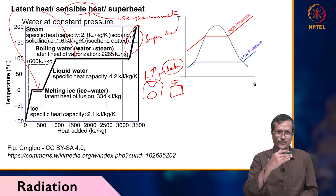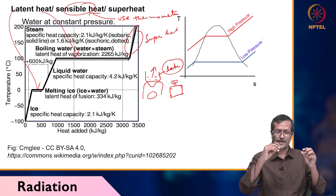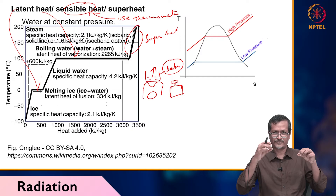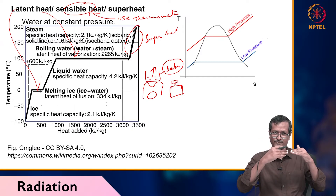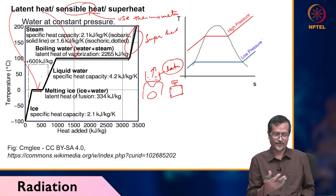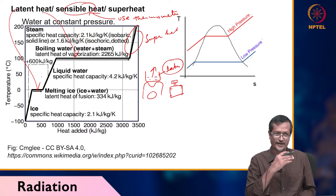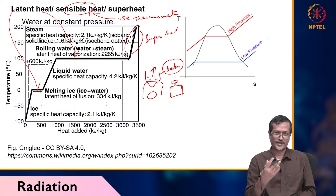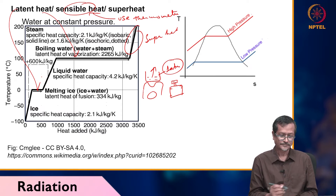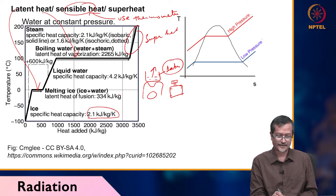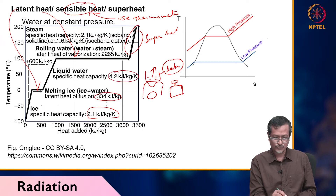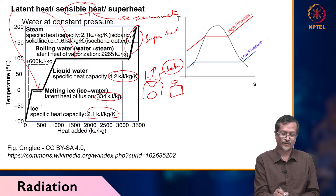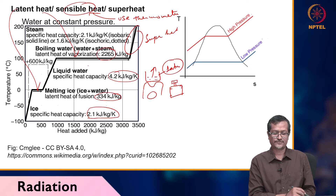Ice at 0 degrees and water at 0 degrees have different amounts of energy — water has more energy because it has absorbed lots of hidden heat from surroundings. Ice specific heat capacity is 2.1 kJ/kg. Liquid water specific heat capacity is 4.2 kJ/kg·K. The latent heat of boiling water (vaporization) is 2265 kJ/kg — these values you have to remember.